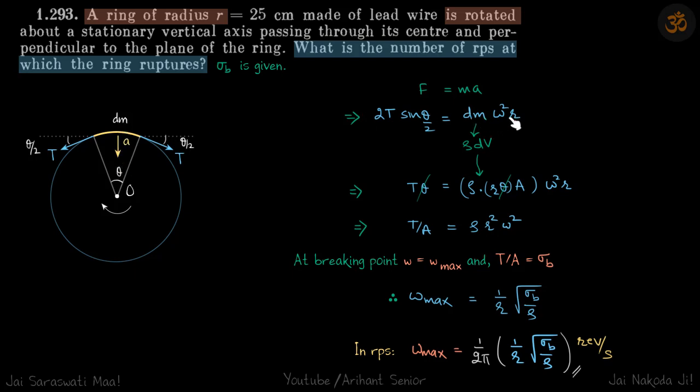And dm is equal to rho into dv, so dv is the volume. dv is length of this part into cross sectional area, that is r theta into A. So again dm is equal to rho dv and dv is equal to r theta into A.